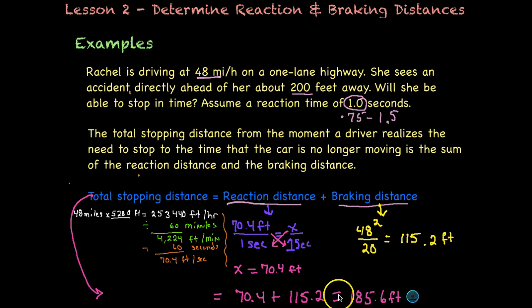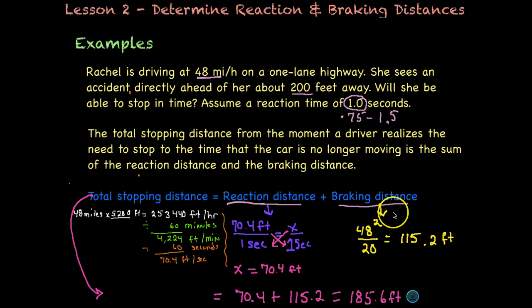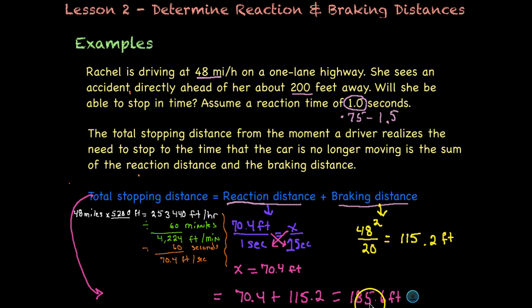It helps to picture how far 185.6 feet is. Thinking in terms of a football field with about three feet per yard, this is about 60 yards — just over halfway down a football field, or a little over halfway through a 100-meter sprint. So this is quite a significant distance.